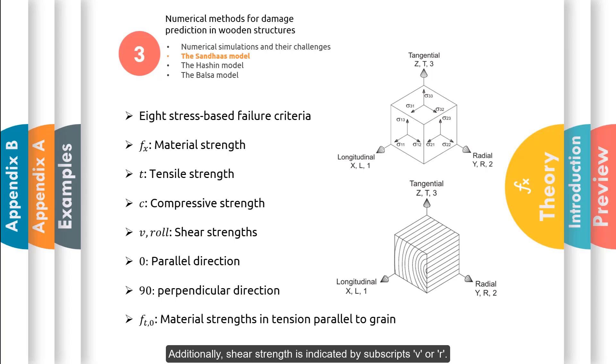Additionally, shear strength is indicated by subscripts V or R. The orientations is specified by 0 for parallel and 90 for perpendicular to the grain.